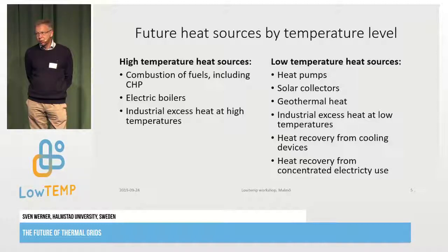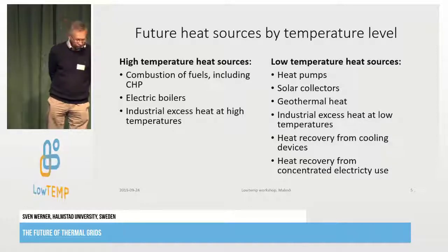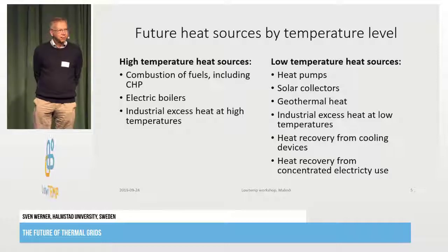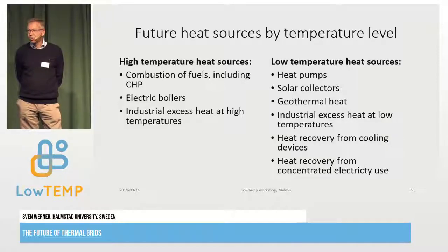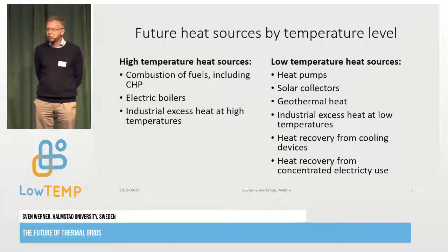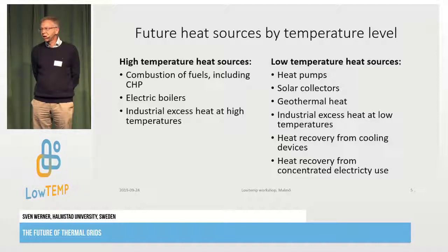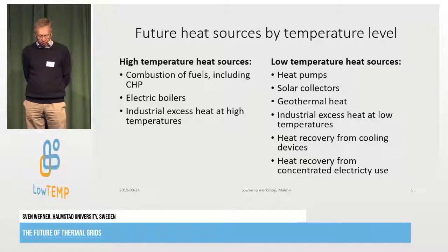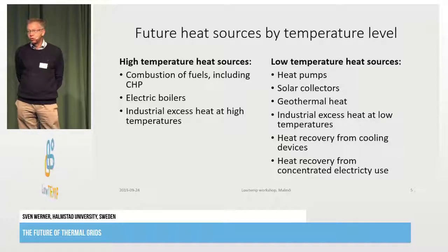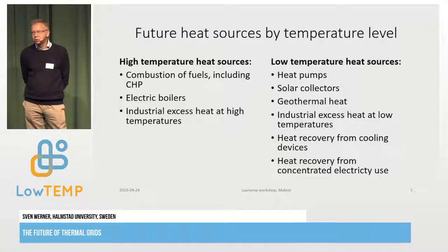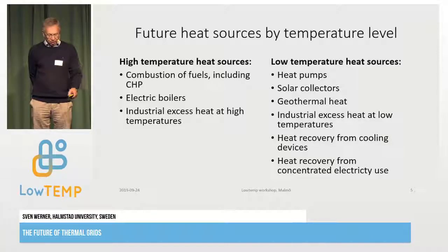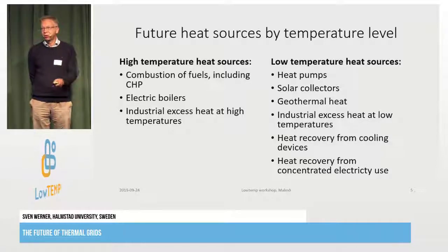But most sources we have in the future will have lower temperatures. Heat pumps become more efficient with a low temperature in the network — the COP becomes higher and less electricity is used. Solar collectors can use a smaller collector field for the same amount of heat at lower temperatures. Most geothermal heat resources in Europe have a temperature between 60 and 80 degrees — if the return temperature is 60 degrees, it's very difficult to get it directly into the system without a heat pump, which is costly. We have lots of industrial excess heat in Europe with low temperatures, heat recovery from cooling devices, and heat recovery from concentrated electricity use such as data centers. So we have lots of sources, but they all deliver low temperature heat.